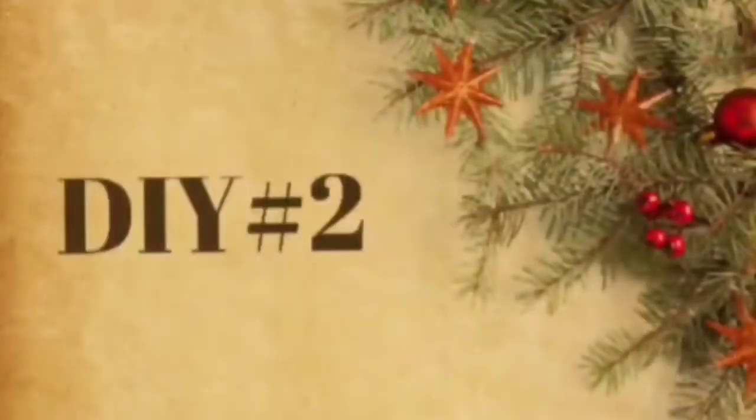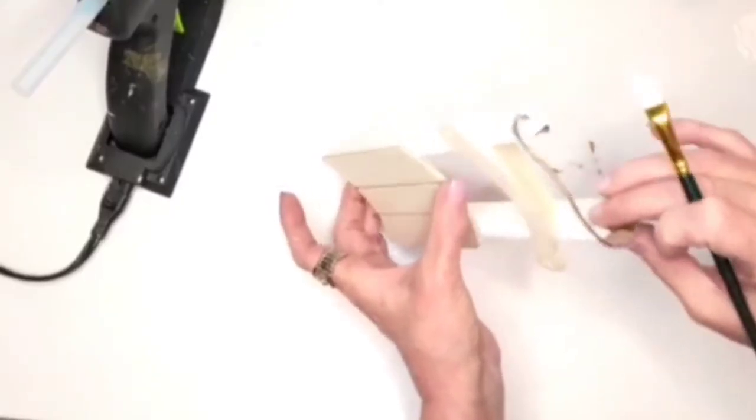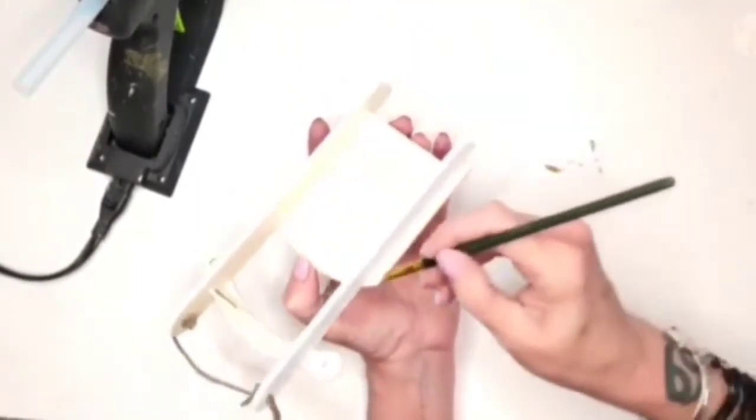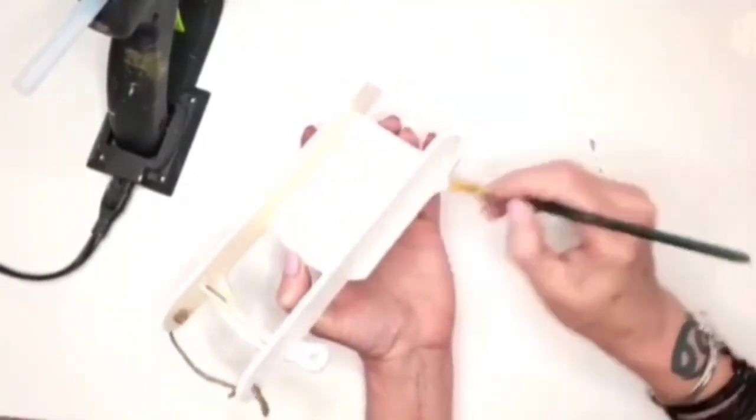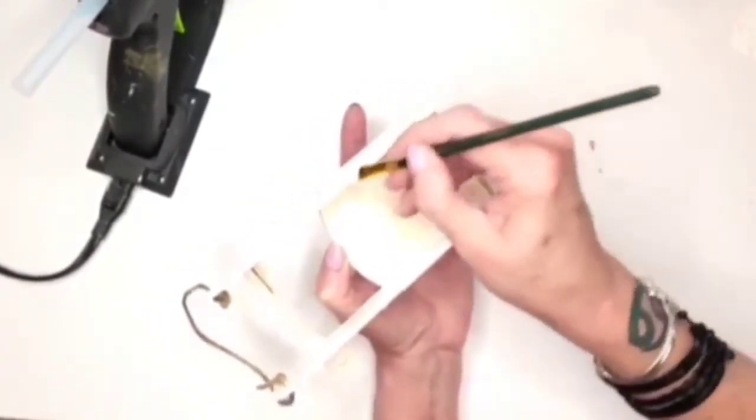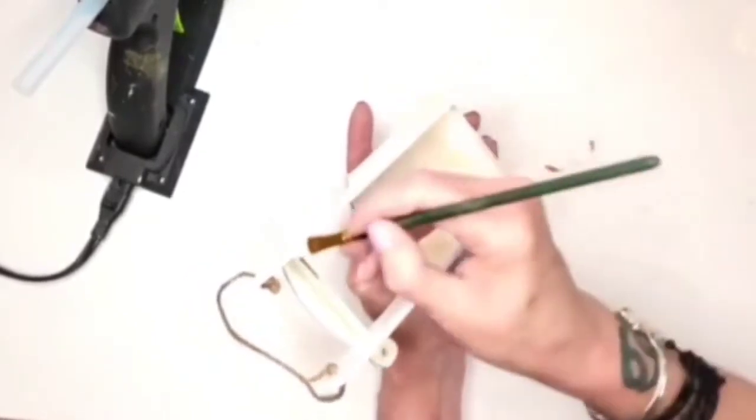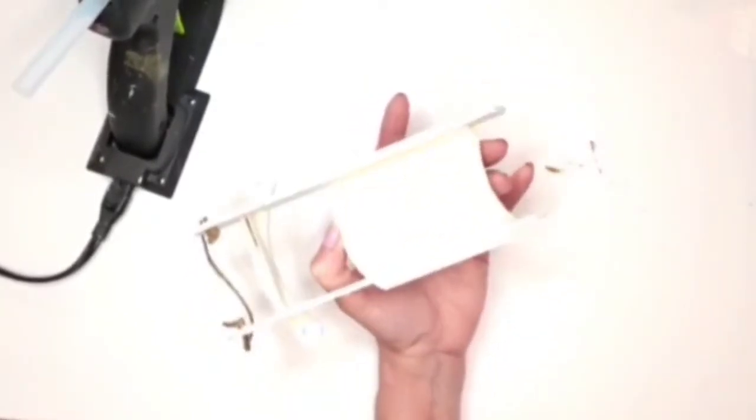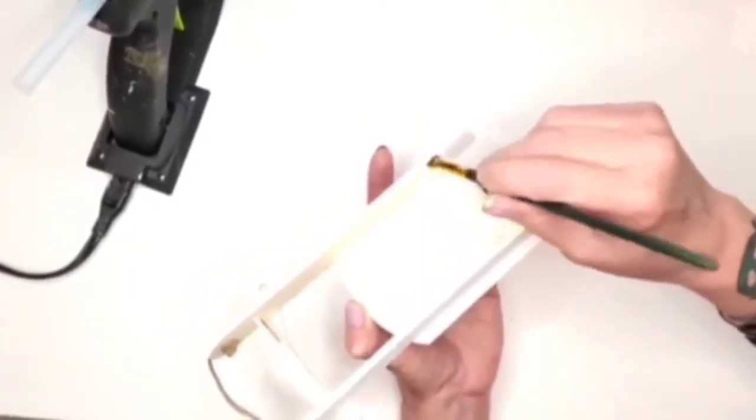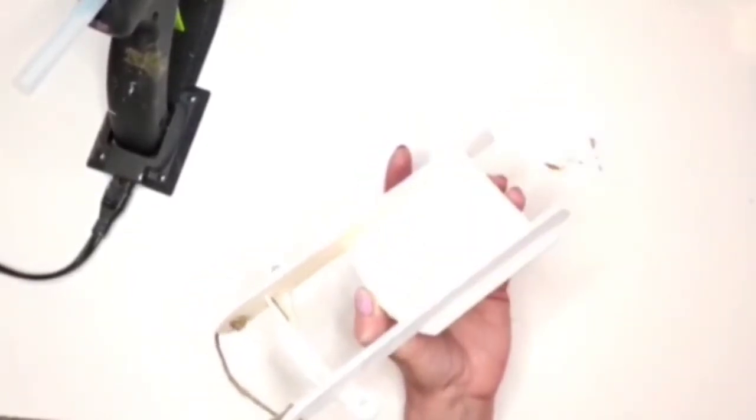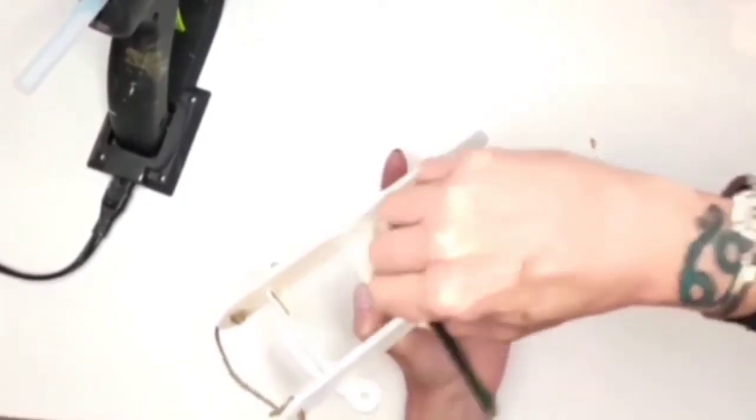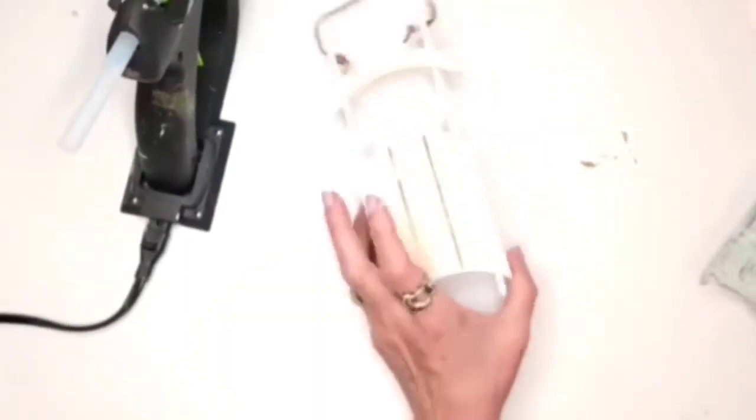On to DIY number two. I got a little sled from the dollar tree. I'm going to go in with the color apple barrel in white and I'm just painting it all over. I will be removing the jute twine little hanger at the top and adding a white ribbon, just making sure that I get the back as well as the sides all covered.